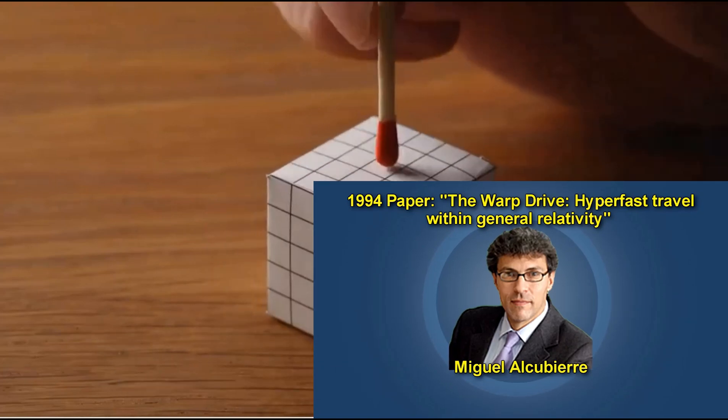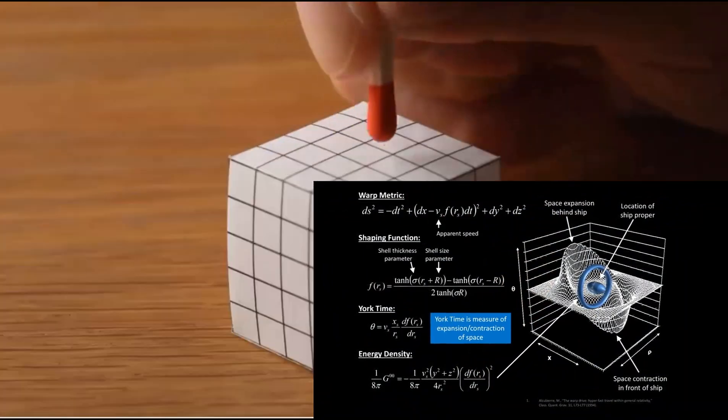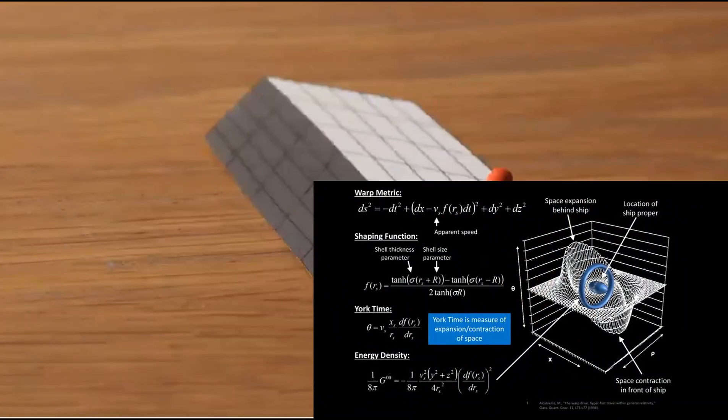He became instantly famous. How did he figure this out? He did this by manipulating Einstein's equations of general relativity. This was a purely geometric manipulation.